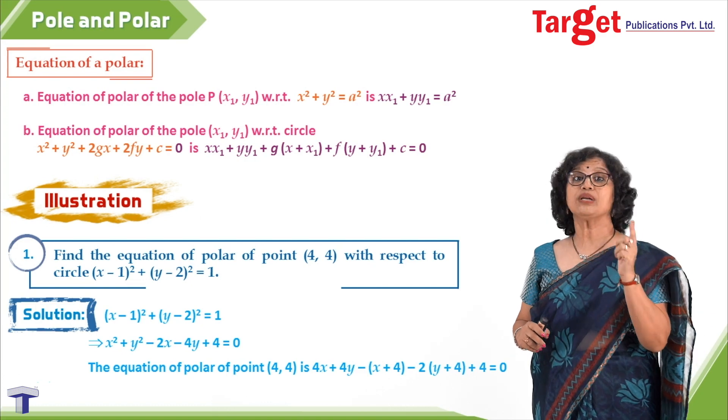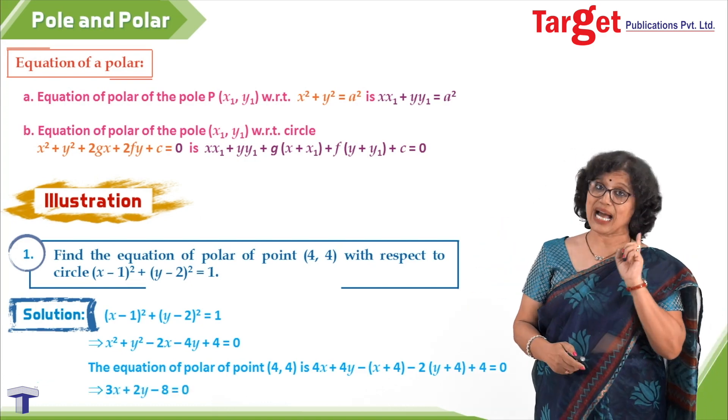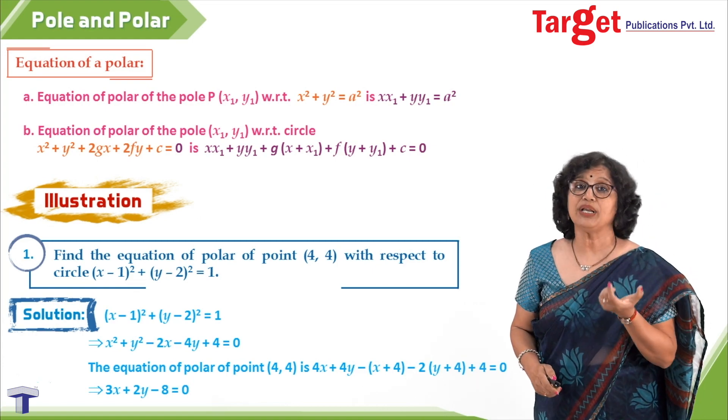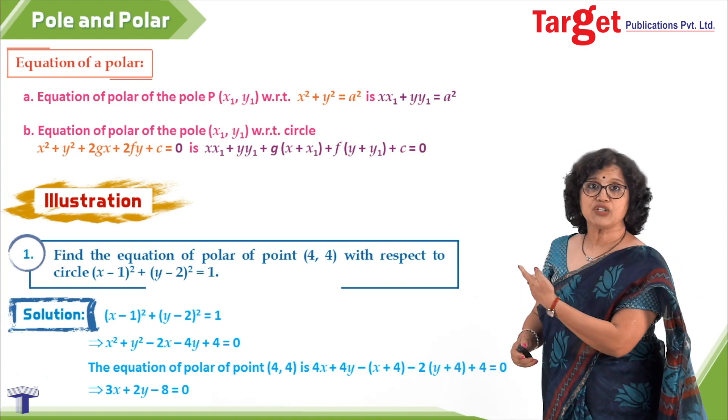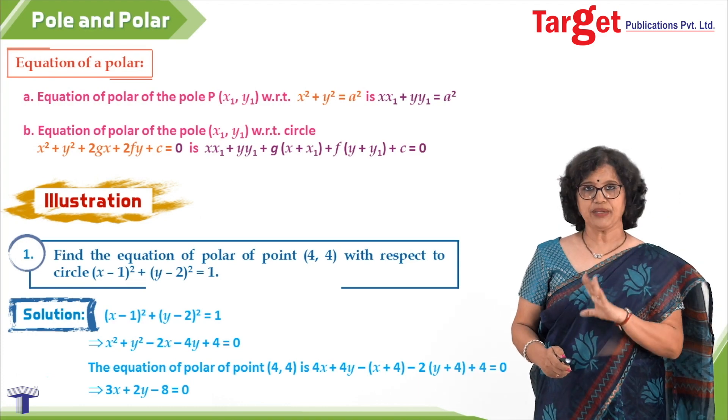What is x₁ here? 4. What is y₁ here? 3. Substitute that and get finally your answer as 3x + 2y - 8 = 0. That is your equation of the polar of point (4, 3) with respect to the circle (x - 1)² + (y - 2)² = 1.